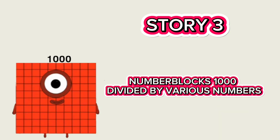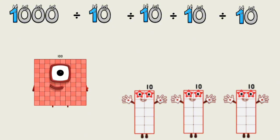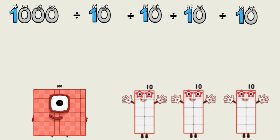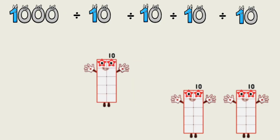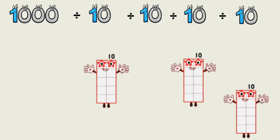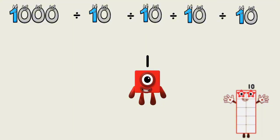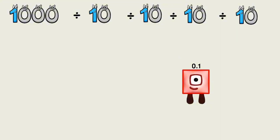Number blocks: 1,000 divided by various numbers. 1,000 divided by 10 equals 100. 100 divided by 10 equals 10. 10 divided by 10 equals 1. 1 divided by 10 equals 0.1.